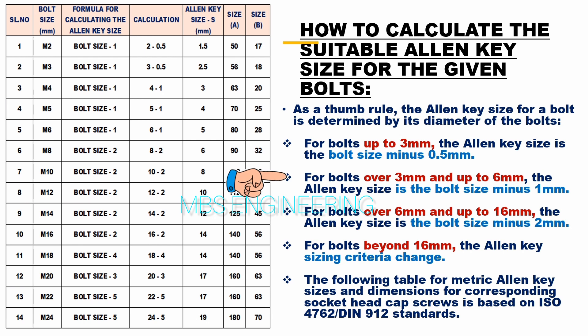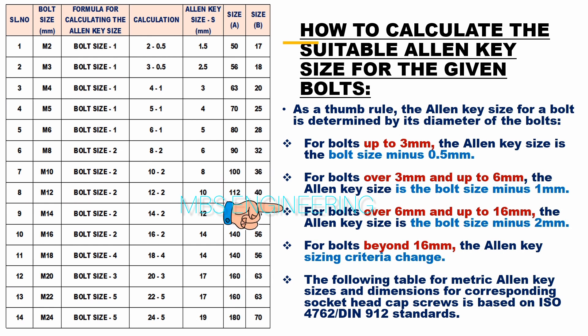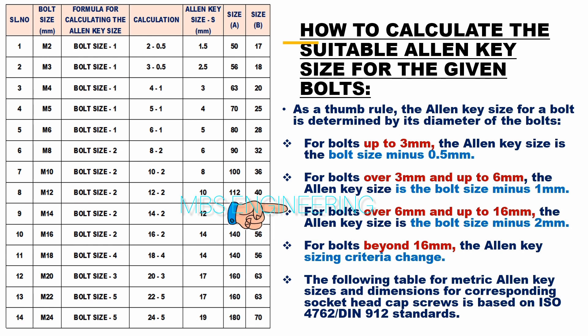For bolts over 3 mm and up to 6 mm, the allen key size is the bolt size minus 1 mm. For bolts over 6 mm and up to 16 mm, the allen key size is the bolt size minus 2 mm.